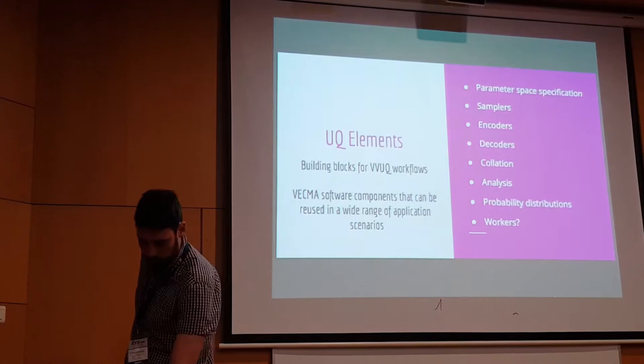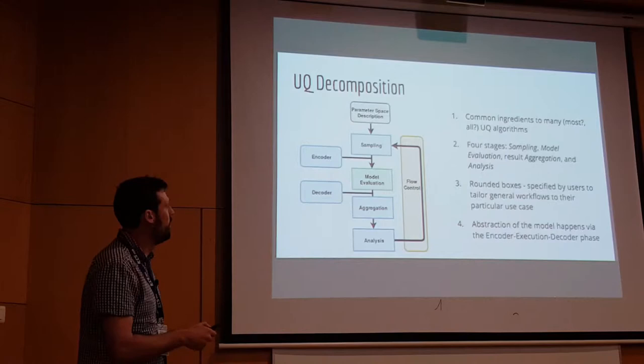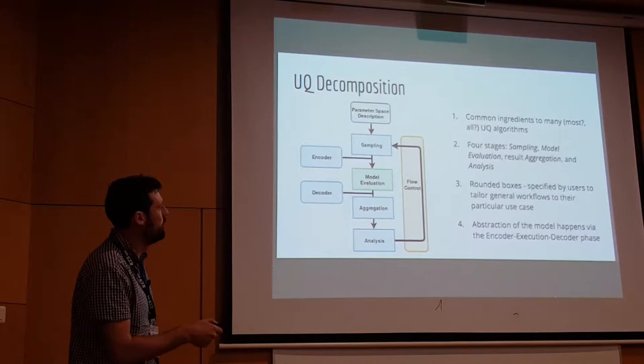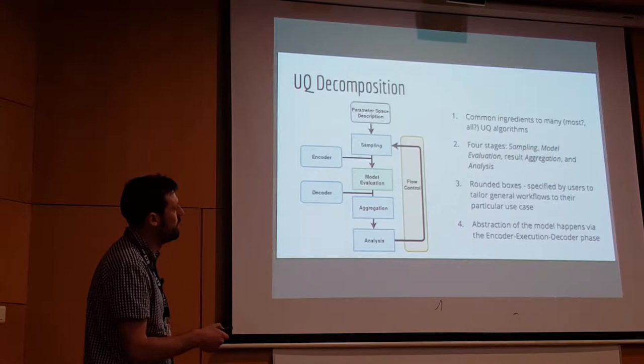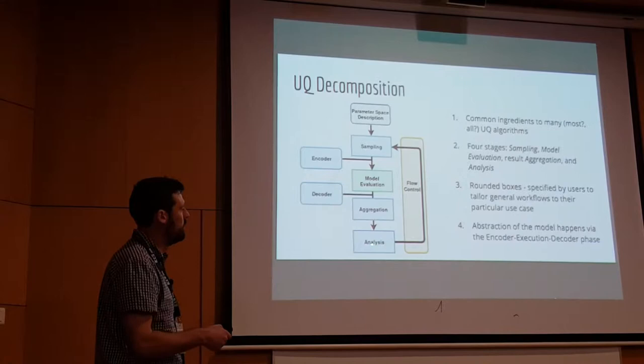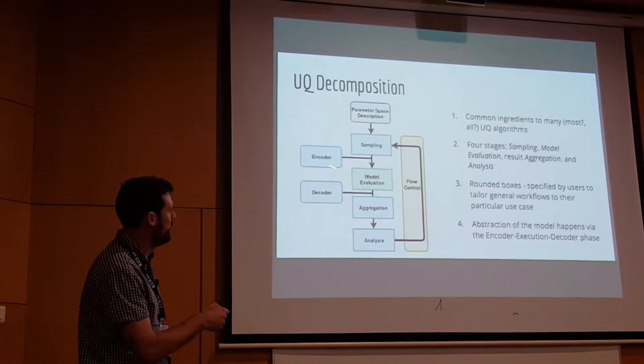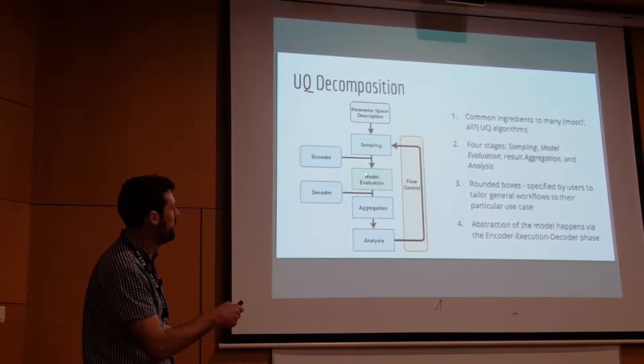Hopefully you'll agree there is at least some kind of repeating pattern you often see in these UQ workflows. We've identified four stages: sampling, model evaluation — so execution effectively — result aggregation and collation, and then an analysis stage. After that, a user will have some kind of complicated flow control that they implement themselves. The abstraction occurs in the encoder-evaluation-decoder phase: everything within there is application specific, but everything outside that region is generic.